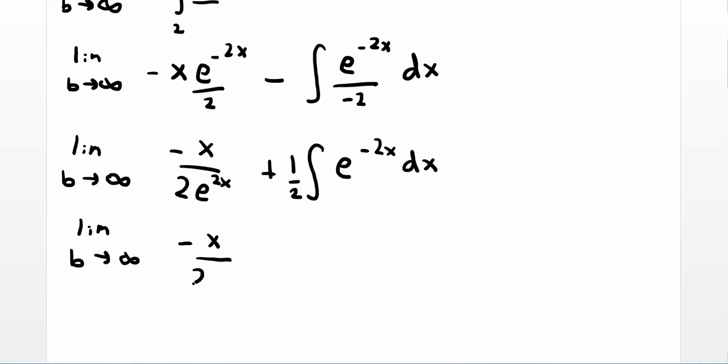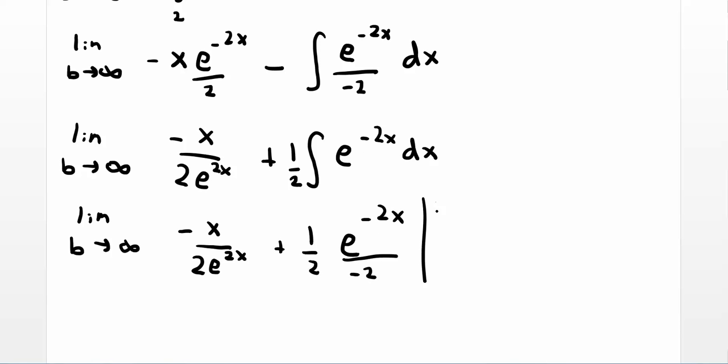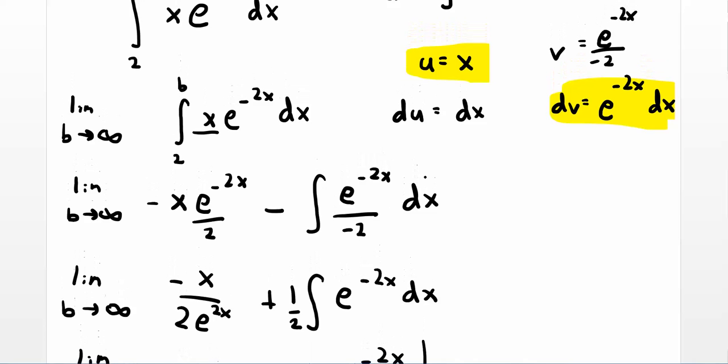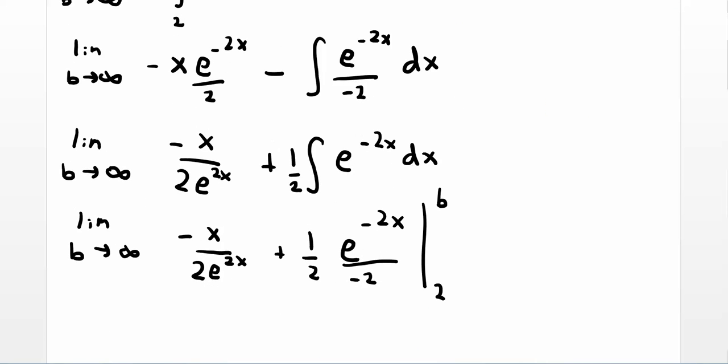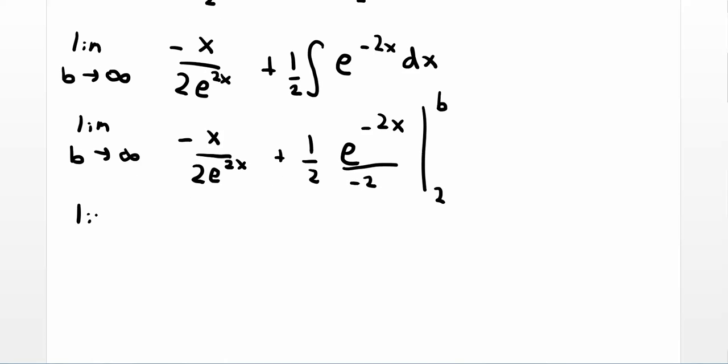Limit as b goes to infinity: negative x over 2 e to the 2x plus 1 half. So the anti-derivative of this we did a little bit earlier. This is e to the negative 2x divided by negative 2. And then we're going to evaluate that on the original bounds from 2 to b. I'll clean it up a bit: negative x over 2 e to the 2x minus 1 over 4. I'm going to bring this one down as well: e to the 2x. Evaluate that from 2 to b.